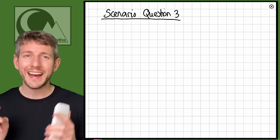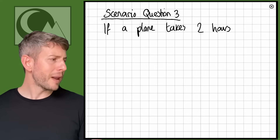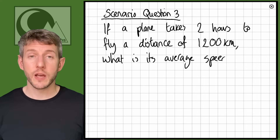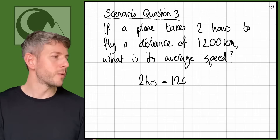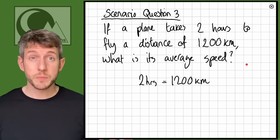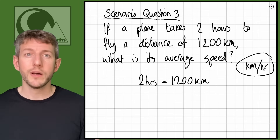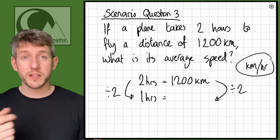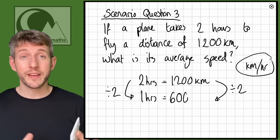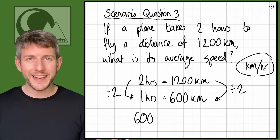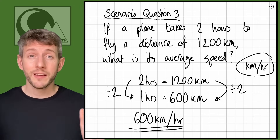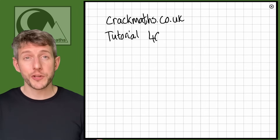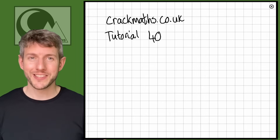Final question: a plane takes two hours to fly 1200 kilometers — what is its average speed? Two hours equals 1200 kilometers, and we want kilometers per hour, so we need to go from two hours to one hour by dividing by 2. Two divided by two gives one hour, and 1200 divided by two gives 600 kilometers. The plane is going 600 kilometers per hour. Thank you for watching — please get some practice at crackmaths.co.uk, tutorial 40. See you in the next tutorial!